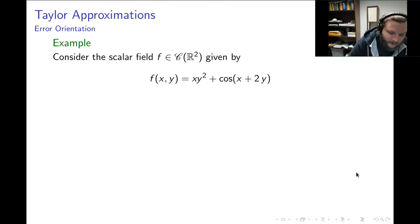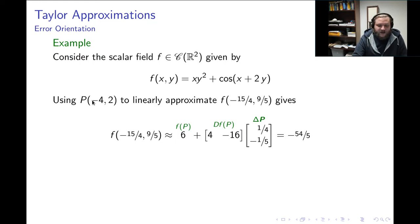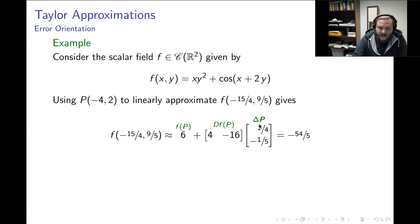Let's look at an example where we apply this concept. Here's a scalar field on two variables. If I use the point negative 4, 2 to linearly approximate f of negative 15 over 4, 9 fifths, my linear approximation is f evaluated at x equals negative 4 and y equals 2, where the original output equals 6. I calculate the Jacobian derivative at my original point, which is 4, negative 16, and multiply by the change vector, which is 1 fourth, negative 1 fifth. The linear approximation gives me negative 54 over 5.